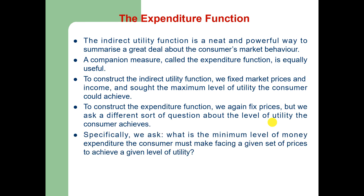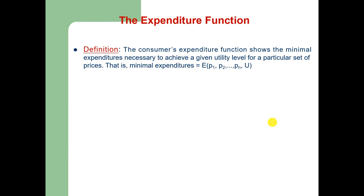Specifically, we ask: what is the minimum level of money expenditure the consumer must make, facing a given set of prices, to achieve a given level of utility? The consumer's expenditure function thus shows the minimal expenditures required to achieve a given utility level for a particular set of prices. That is, minimal expenditures equal E(P1, P2, ..., Pn, U), where U is some target utility level.